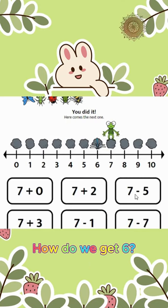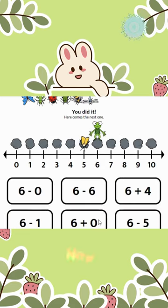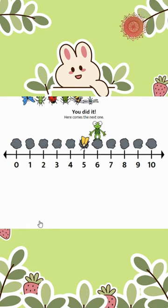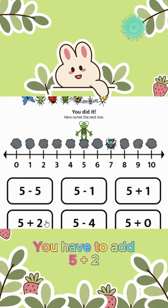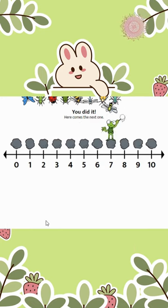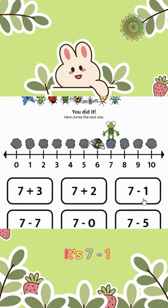How do we get 6? It's 7 minus 1. Now get 5. It's 6 minus 1. Get 7. You have to add 5 to 2. What about 6? It's 7 minus 1.